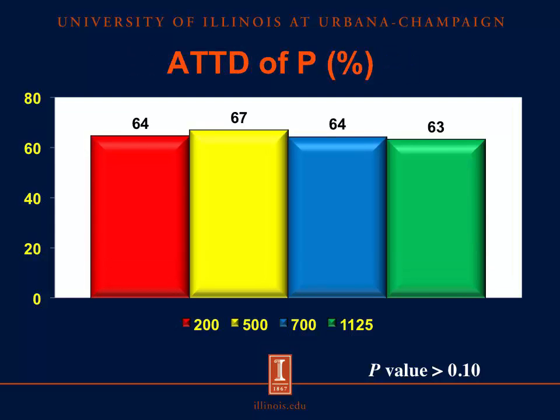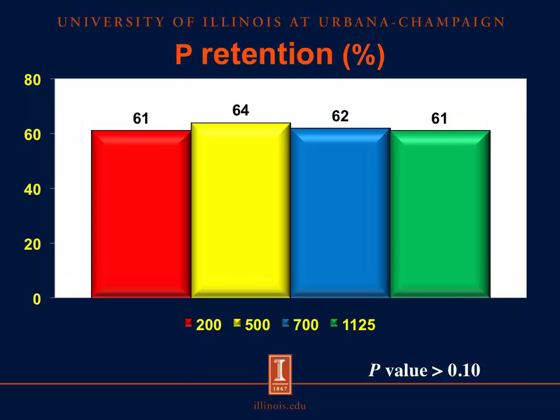Next, I will switch gears and discuss the results for phosphorus. There were no differences among dietary treatments for the apparent total tract digestibility of phosphorus, expressed as a percent, with values ranging between 63 and 67. Finally, there were no differences in the retention of phosphorus, expressed as a percent, with values ranging from 61 to 64.